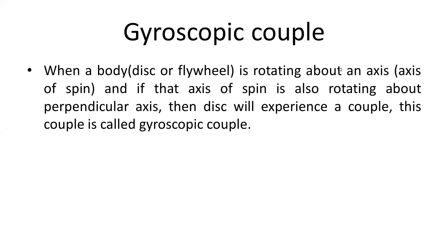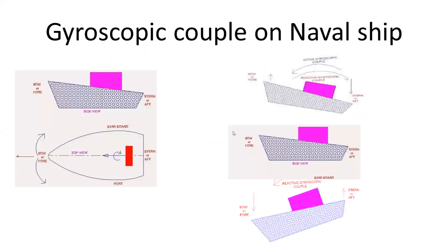During the last lecture we have seen the gyroscopic couple or the gyroscopic effect and how this effect is experienced in spinning objects like a disk, flywheel, or wheel. So today we will discuss about the gyroscopic effect or the gyroscopic couple on the naval ship. When the ship is sailing in sea water, it experiences the gyroscopic couple during the steering motion, pitching motion, and the rolling motion.